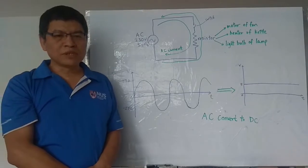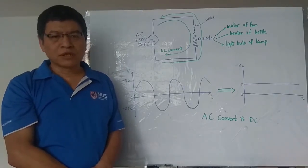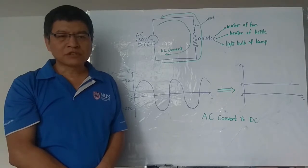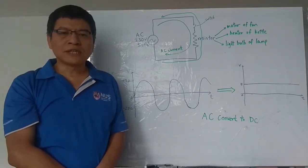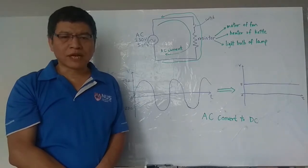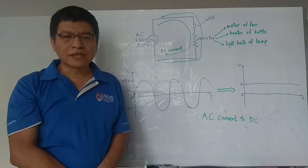The resistor can be motor of your fan. Once current passes through the motor, the fan will rotate. The resistor also can be a heater of your kettle. Once current passes through the heater, it will generate heat to boil water, or the resistor also can be a bulb to light up the lamp. By the way, many simple appliances are operated in AC.